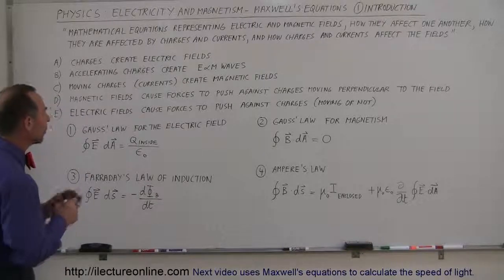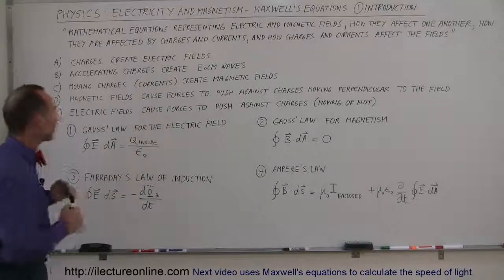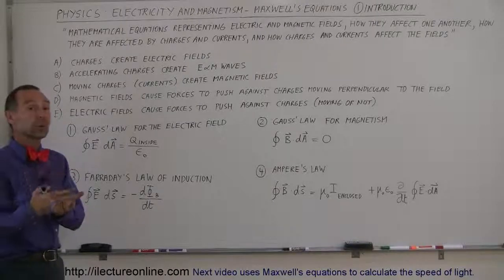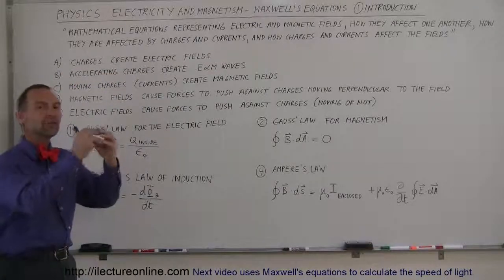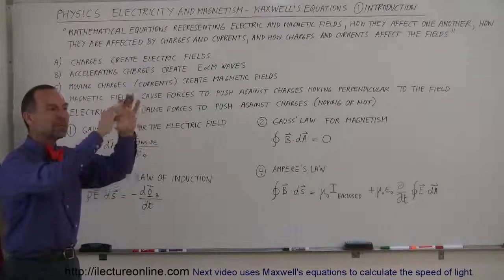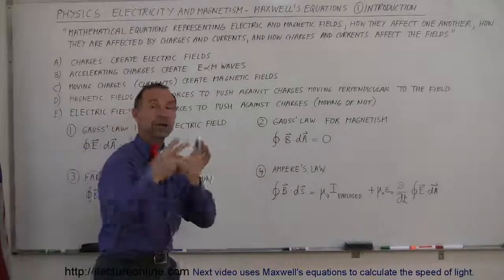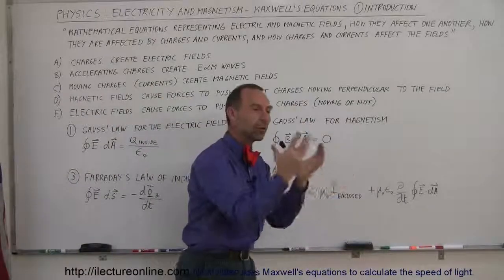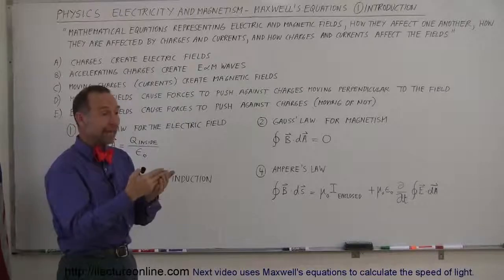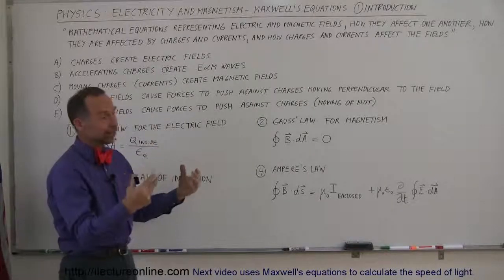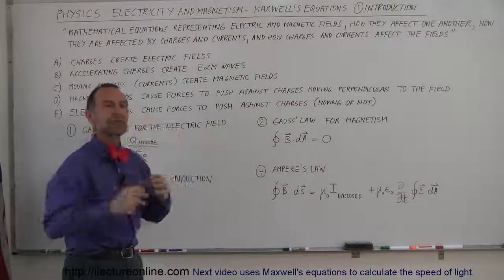I wanted to give you more of an idea of how electric and magnetic fields interact with each other, so I put down five statements that will hopefully help us understand Maxwell's equations a little bit more. First of all, charges create electric fields. Whenever there's a charge present, there's going to be an electric field around it. Those charges don't have to do anything — just sit there. If charges move, electric fields will move along with them. Since all matter in the universe is made up of charged objects — atoms which have positive charges in the nucleus, negative charges in the electrons — every proton, every electron in the universe has electric fields around them.